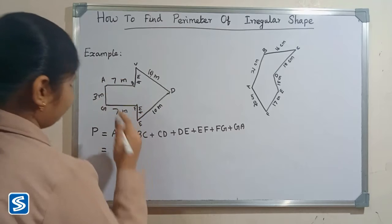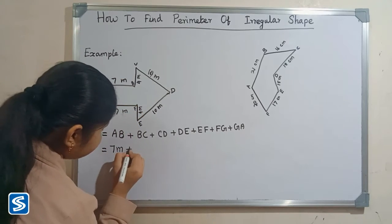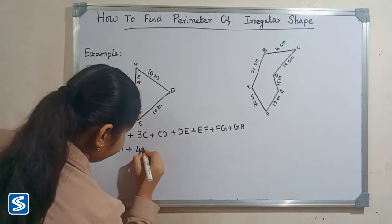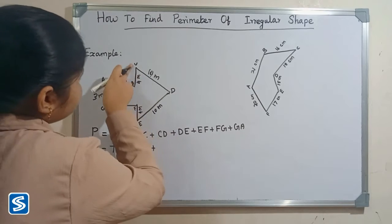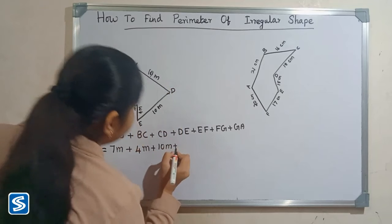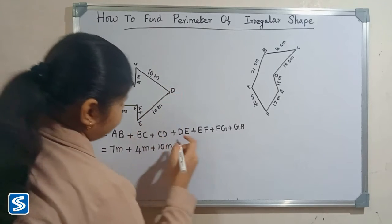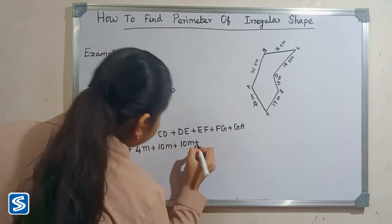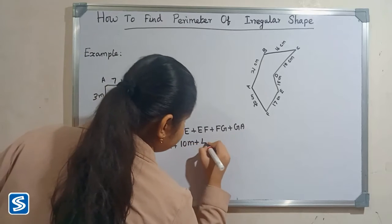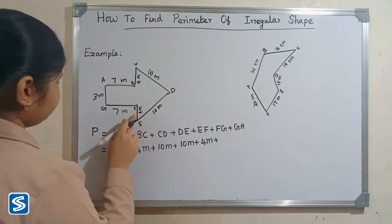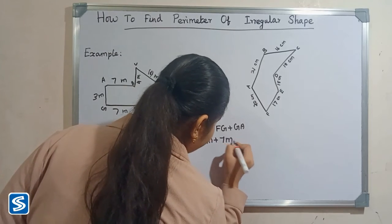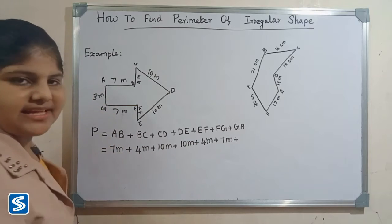Here AB is 7 meters, plus BC is 4 meters, plus CD is 10 meters, plus DE is 10 meters, plus EF is 4 meters, plus FG is 7 meters, plus GA is 3 meters.